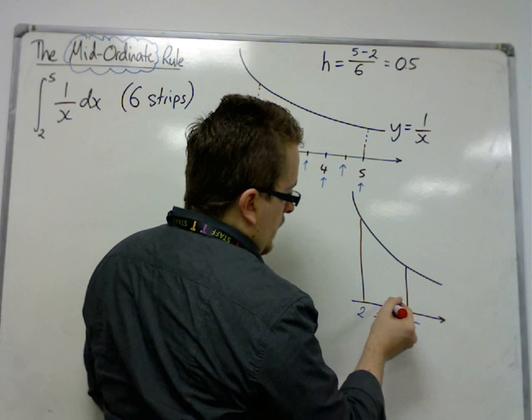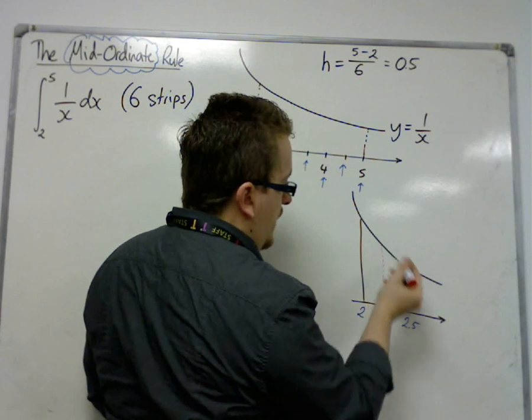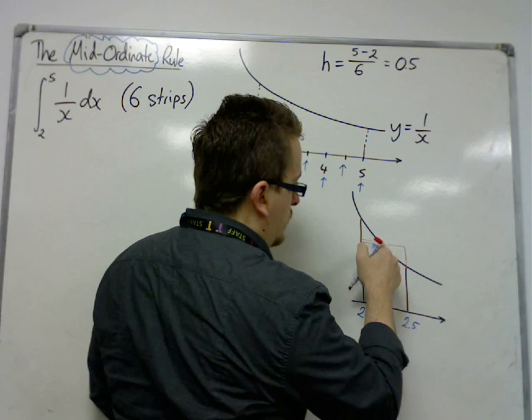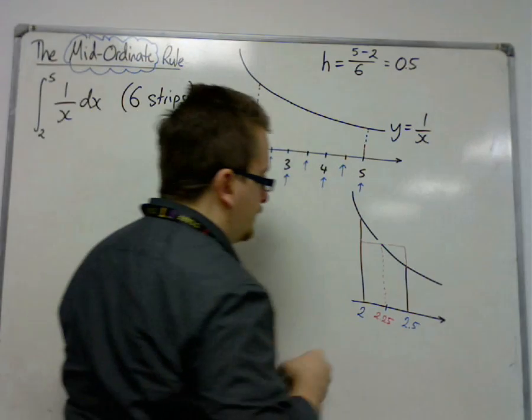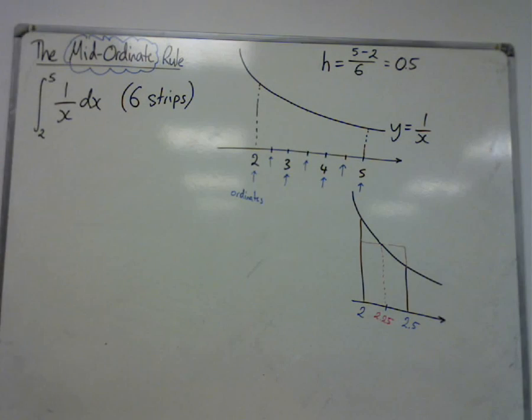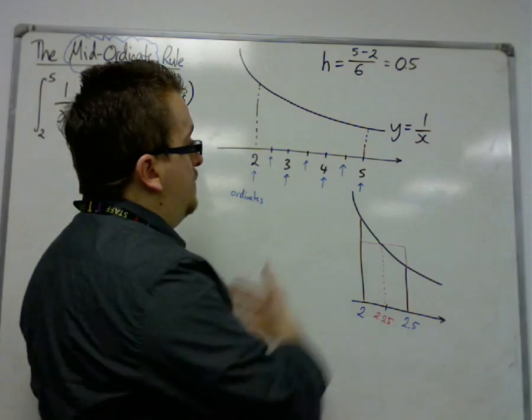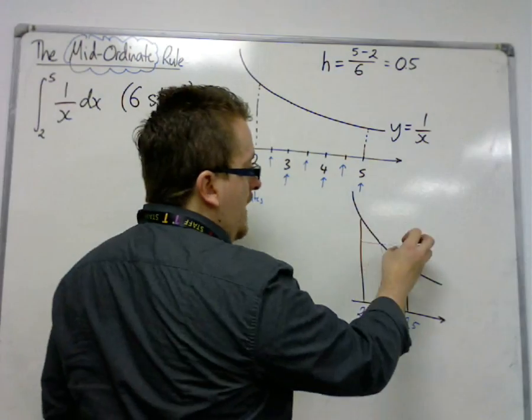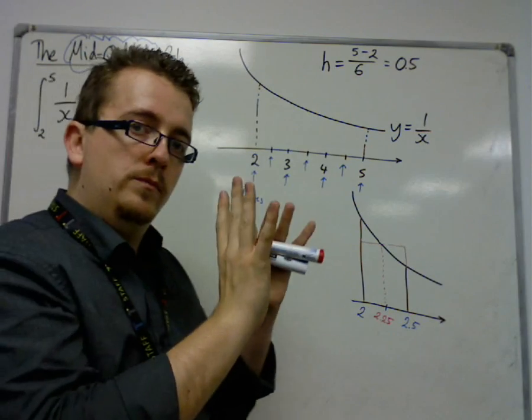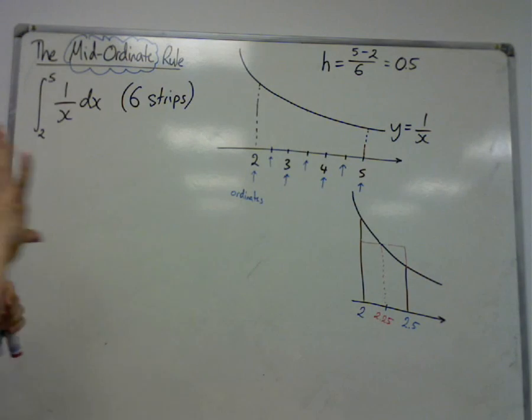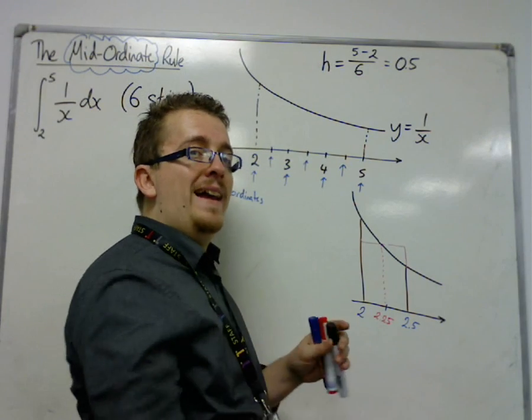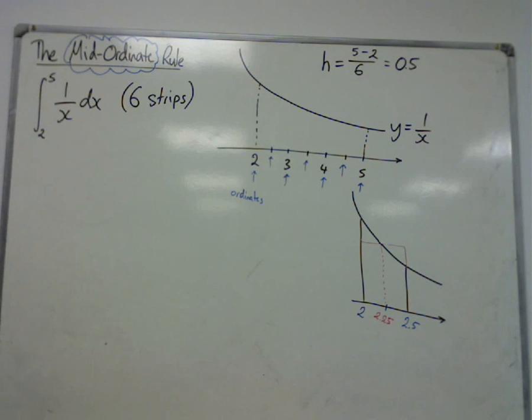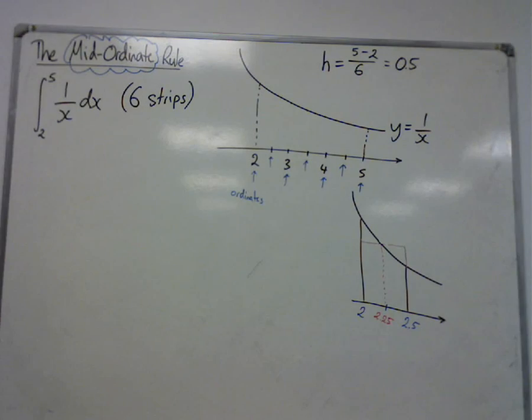And what we do is we estimate this area by looking at the area of this rectangle. As you can see, if you zoomed in like this, this area is looking very similar to this one. By moving that bit there, I can kind of create a rectangle. Now obviously we have problems with overestimation and underestimation, which we'll look at in a minute, or if I have time on this video, if not in the next video.